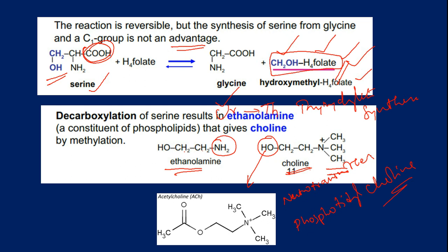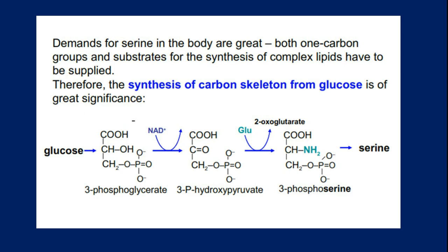Serine is a very important ingredient in our biochemical processes. Both one-carbon groups and substrates for synthesis of complex lipids must be supplied from serine. The synthesis of its carbon skeleton from glucose is of great significance. Serine is obtained from 3-phosphoserine, which is obtained from 3-phosphopyruvate, which in turn is obtained from 3-phosphoglycerate, which is obtained from glucose via glycolysis.